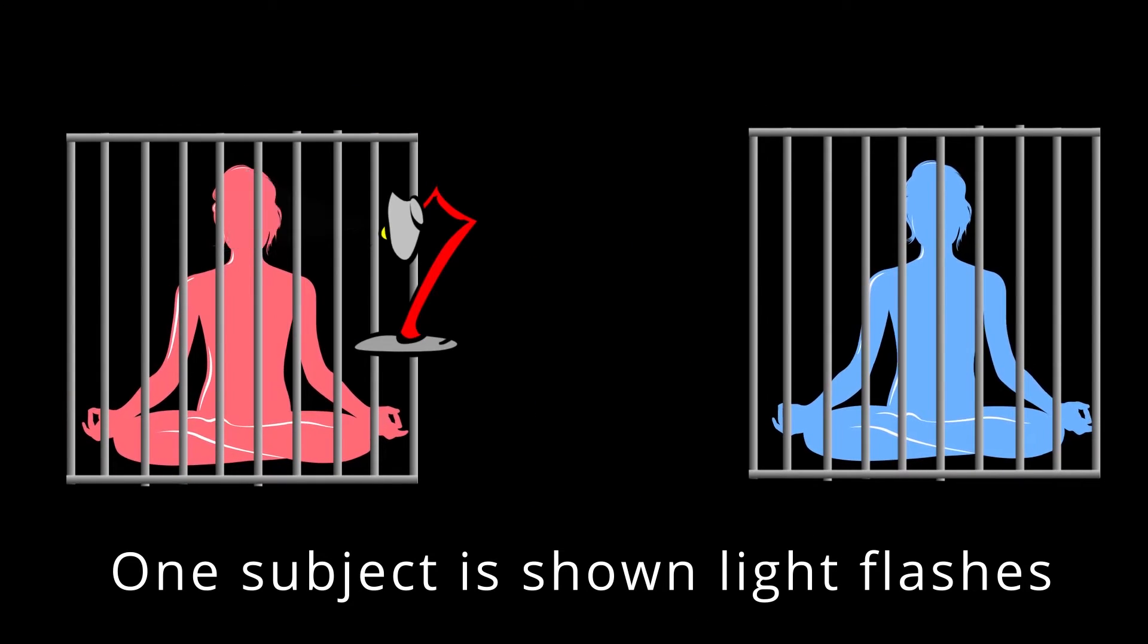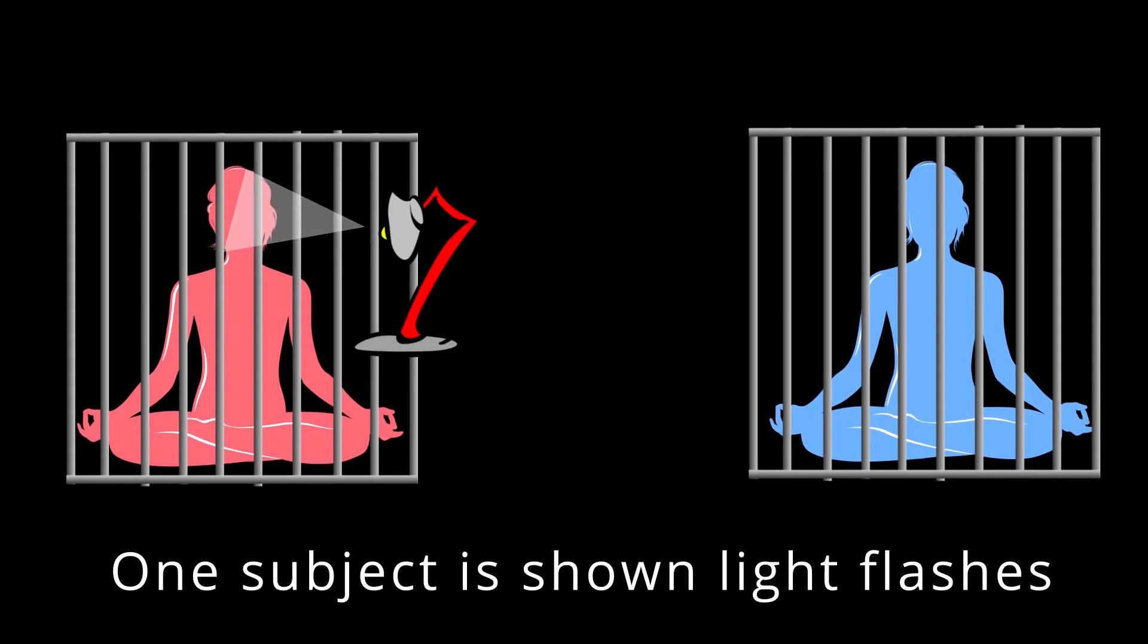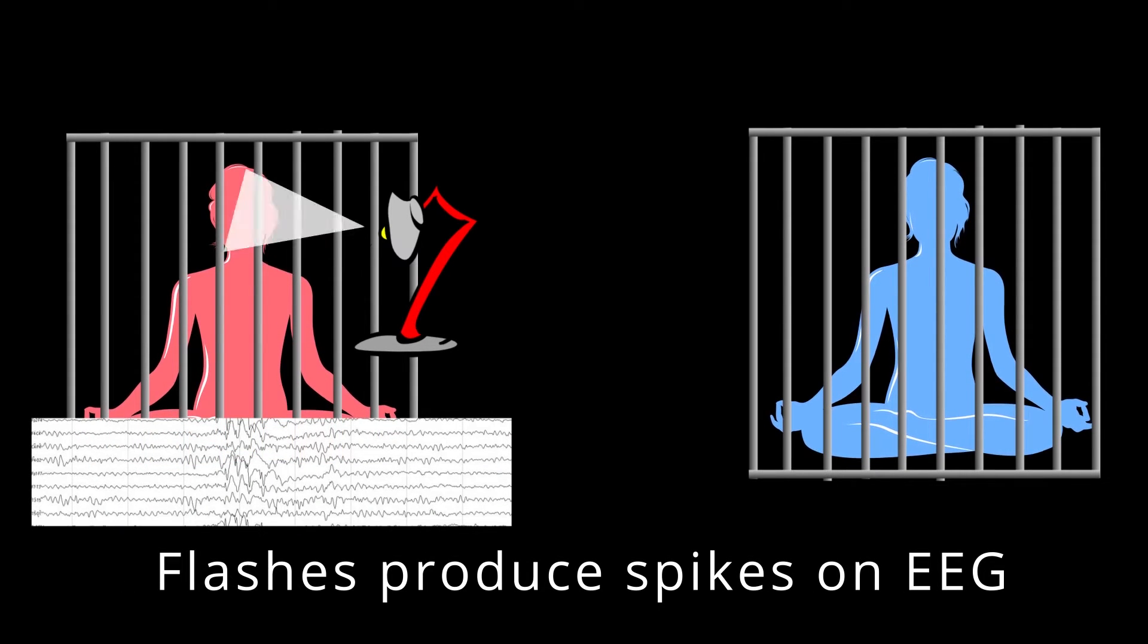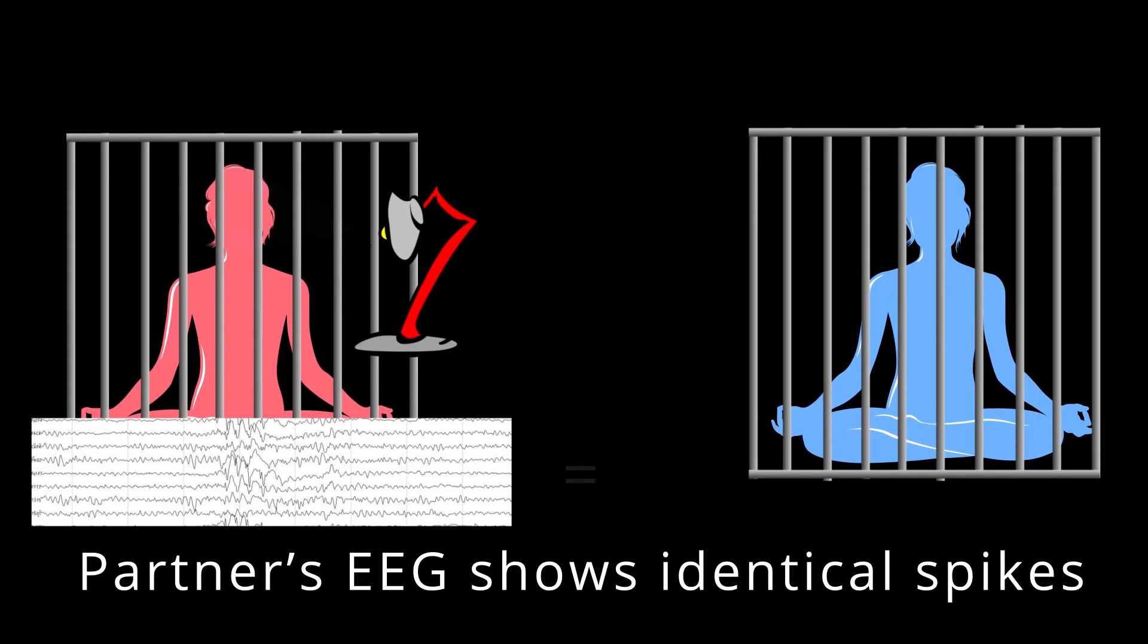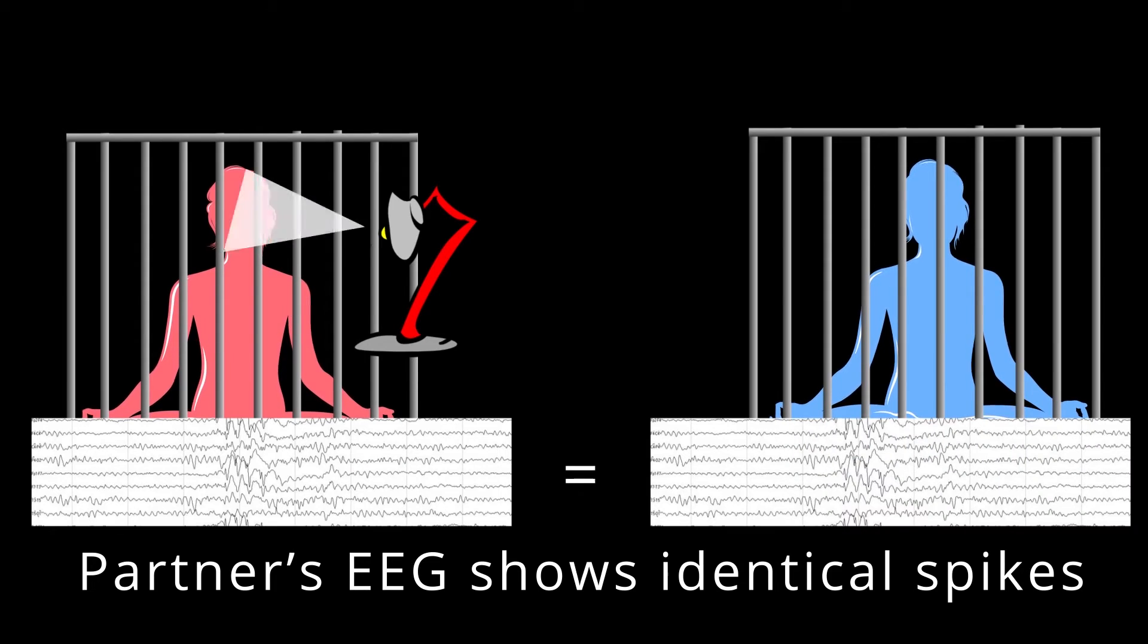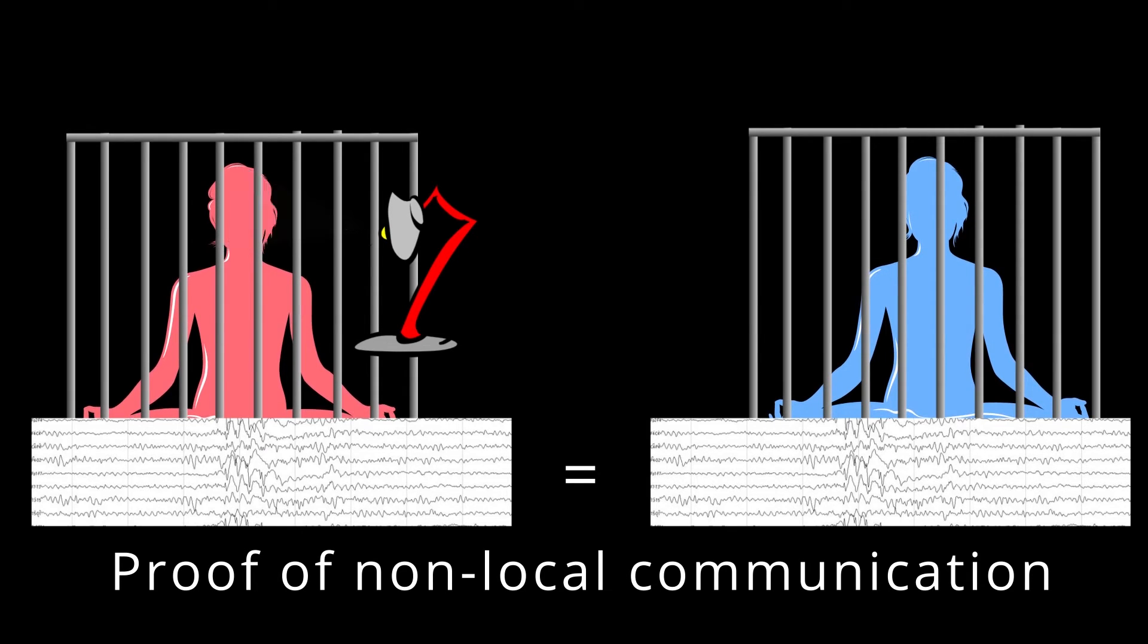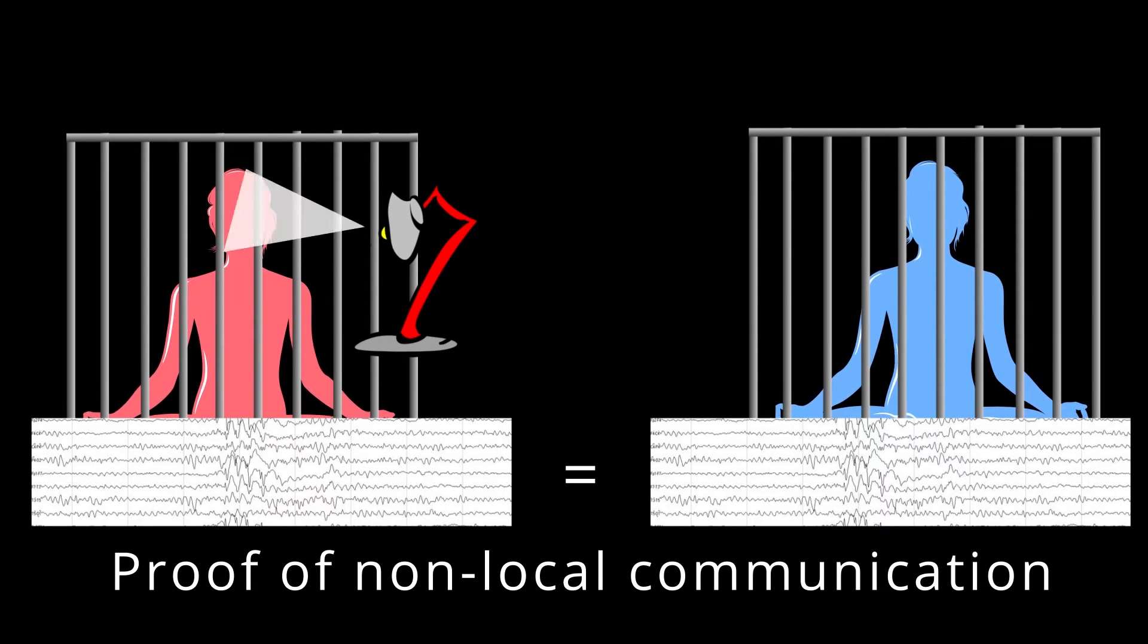Then, only one subject is shown a series of light flashes producing electrical activity in his brain, which is deciphered from its recording in his EEG as an evoked potential. Amazingly, his partner's EEG readings, when deciphered, show that the evoked potential evoked by the light flashes has been transferred to her brain as well, without any local connection.